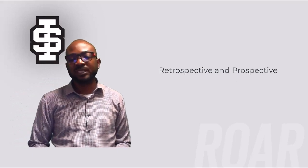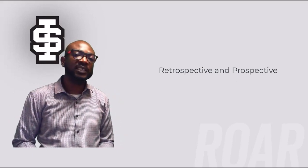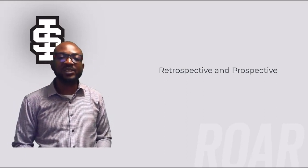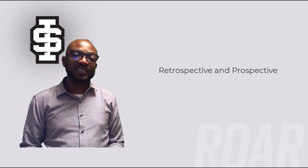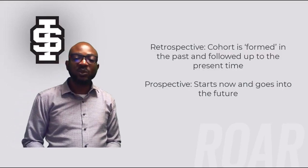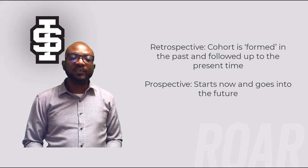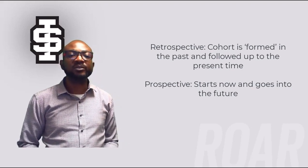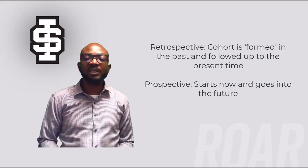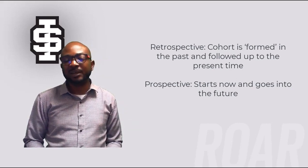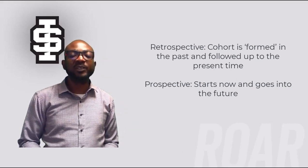There are two types of cohort studies: retrospective and prospective, classified according to their temporal sequence. Retrospective and prospective refer to the time the investigator initiates the study and starts collecting data. Both designs assemble cohorts on the basis of exposure first. In the retrospective study, the cohort is formed in the past and followed up to the present. The prospective study starts now and goes into the future. In the prospective study, investigators obtain baseline exposure data in real time and then follow cohort members to measure the occurrence of the health outcome or disease.